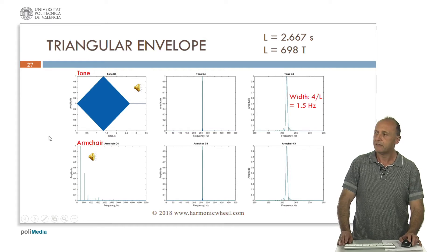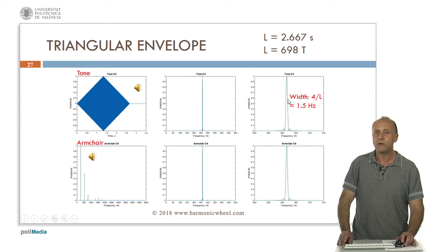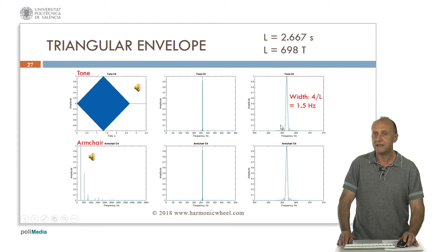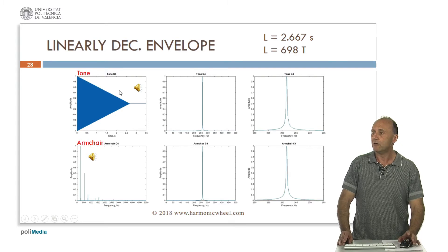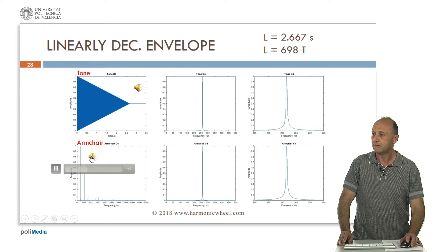Now let's consider a triangular envelope — that is crescendo and decrescendo, as can be done for example with a violin or a wind instrument. In this case the spectral line has a width which is double that of the previous case, that is 4 divided by the length, 1.5 Hertz. And in the case of the armchair with crescendo and decrescendo, we have several lines, each of them equal to the one in the tone. Now a linearly decreasing envelope — that is only the decrescendo, as occurs for example with a piano or a guitar. The shape of the spectral line changes accordingly, and it contains several lines, each of them equal to the one in the tone.